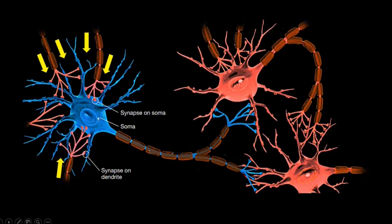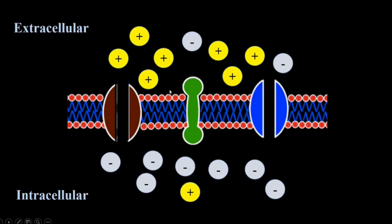The cell body integrates the information and sends it to the axon. The axon further carries the information to its terminal ends, which transmit the information to the terminal buttons of its next neurons. The inside of the axon of most neurons is negatively charged compared to the outside, and any difference in positive or negative charges across the axon membrane is called membrane potential.